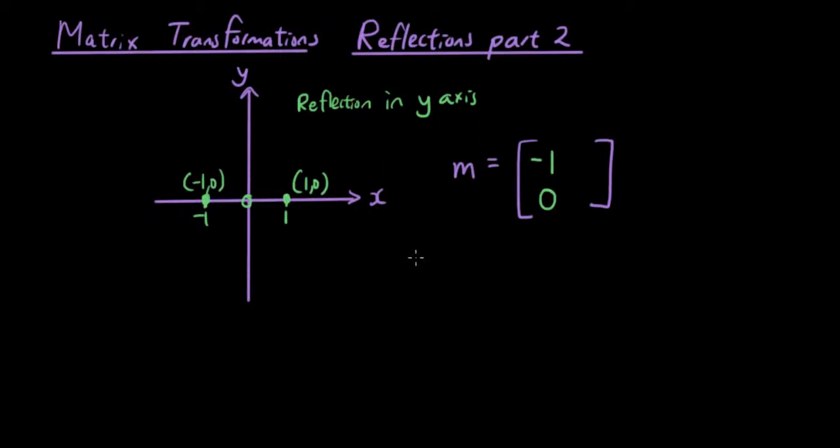And then we do the same thing but for a second point which is going to start at x is 0 and y is 1 and what is the image of this point after we conduct the reflection? Well, it's already sitting on the y-axis. If we reflect it in the y-axis it will end up being at the same point. Therefore we write the coordinates of the image in our reflection matrix and that's the answer.